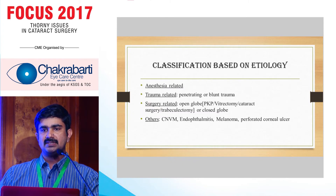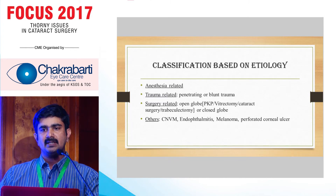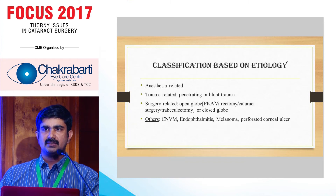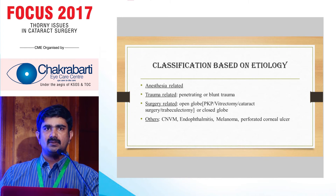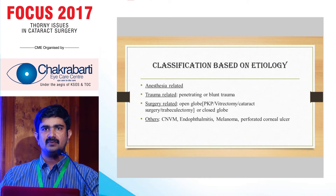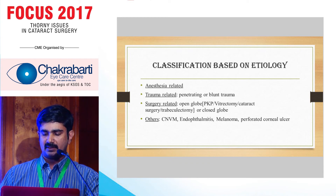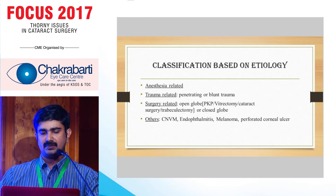Based on etiology, it can be anesthesia-related — retrobulbar blocks are notorious for causing that — trauma-related, or surgery-related, including open globe injuries like PKP, vitrectomy, cataract surgery, or closed globe surgeries like scleral buckling. Spontaneous suprachoroidal hemorrhage is also seen with CNVMs or IPCV where blood tracks subretinally and suprachoroidally. Endophthalmitis, melanoma, and perforated corneal ulcer can all cause spontaneous suprachoroidal hemorrhage.